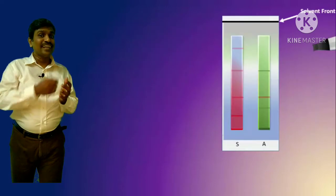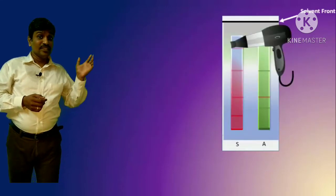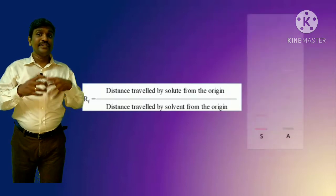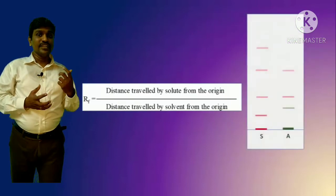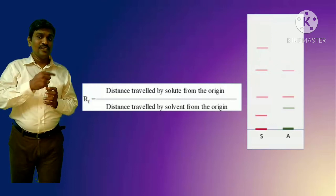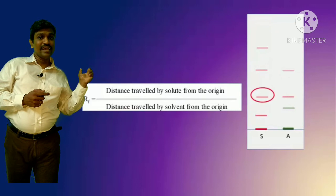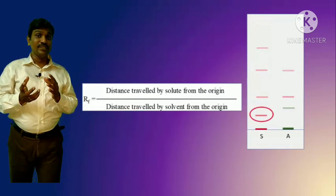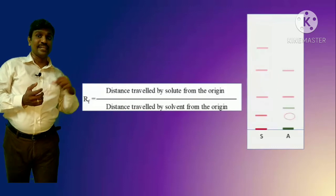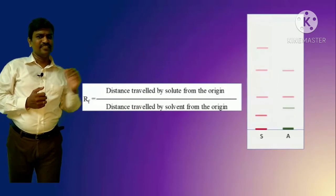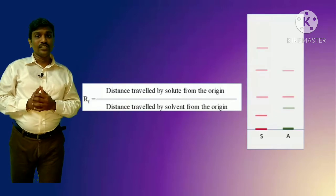After drying, keep the plate in a developing reagent. The developing reagent will react with your spot or phyto constituent and color it. Then dry the plate again — you can see the plate being dried here. Once dried, the color develops. You can now see the standard (S) and the sample (A). If the markings match, the drug contains that constituent found in the standard; if not, the mark will be absent.